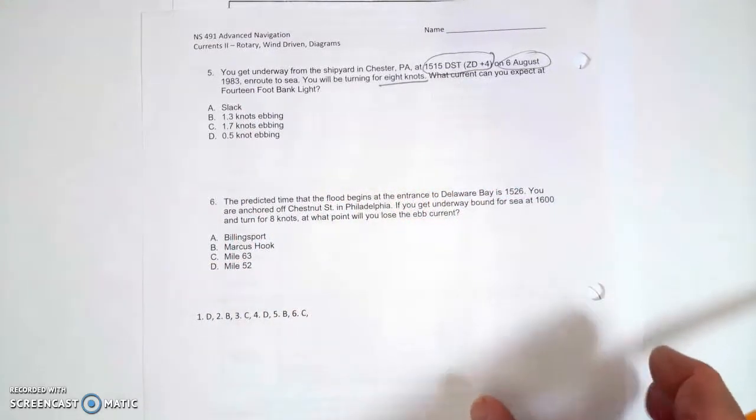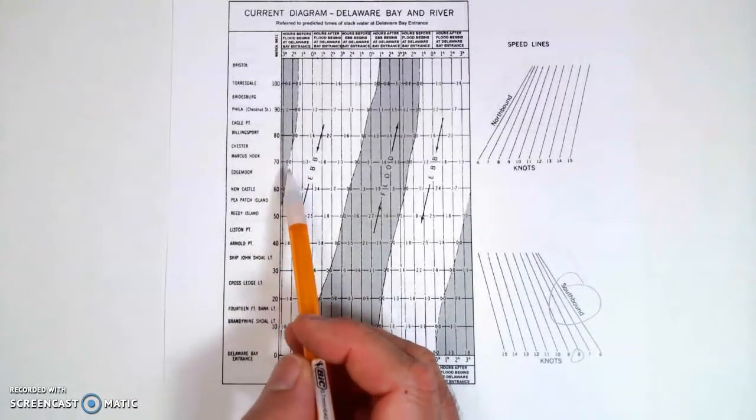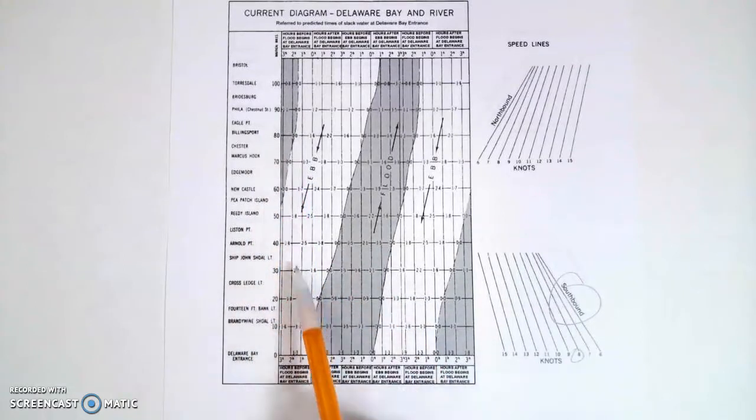They want to know what current should we expect at 14 foot bank light. So we're going to leave from Chester. Here's Chester, and they want to know what current will we expect when we get down here.